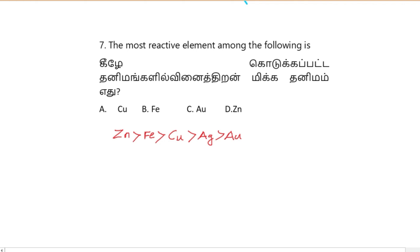Similarly, when we move from left to right in a period — that is Iron to Zinc — the reactivity does not decrease. The reactivity of Zinc is greater than Iron. So among these elements, the element having the highest reactivity is Zinc.